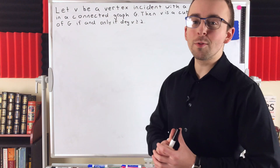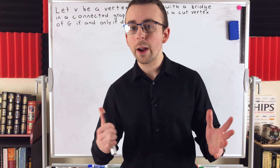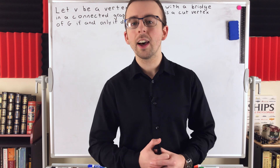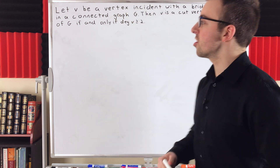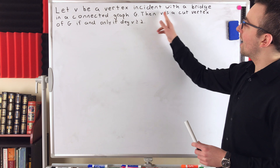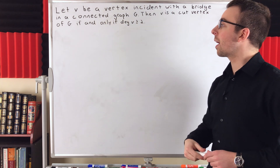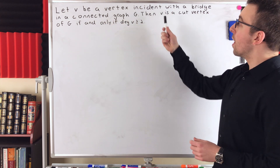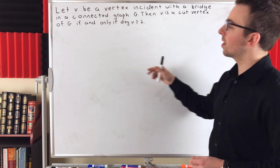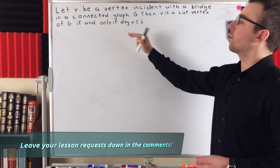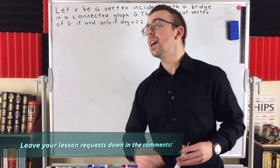Hey everyone, got a fun proof for you in today's Wrath of Math lesson about a theorem characterizing cut vertices that are incident with bridges. Let V be a vertex incident with a bridge in a connected graph G. Then that vertex V is a cut vertex of G if and only if the degree of V is greater than or equal to 2.